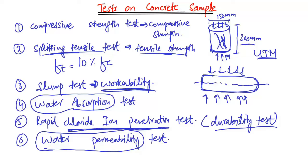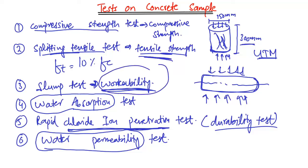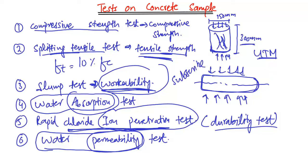These are the important tests performed on concrete — some in the laboratory and some on site — to determine properties such as compressive strength, tensile strength, workability, water absorption, chloride ion penetration resistance, and water permeability. Hope you guys understand. Please subscribe to our channel for daily civil engineering videos, like the video, and check the new channel link in the description. Thank you.